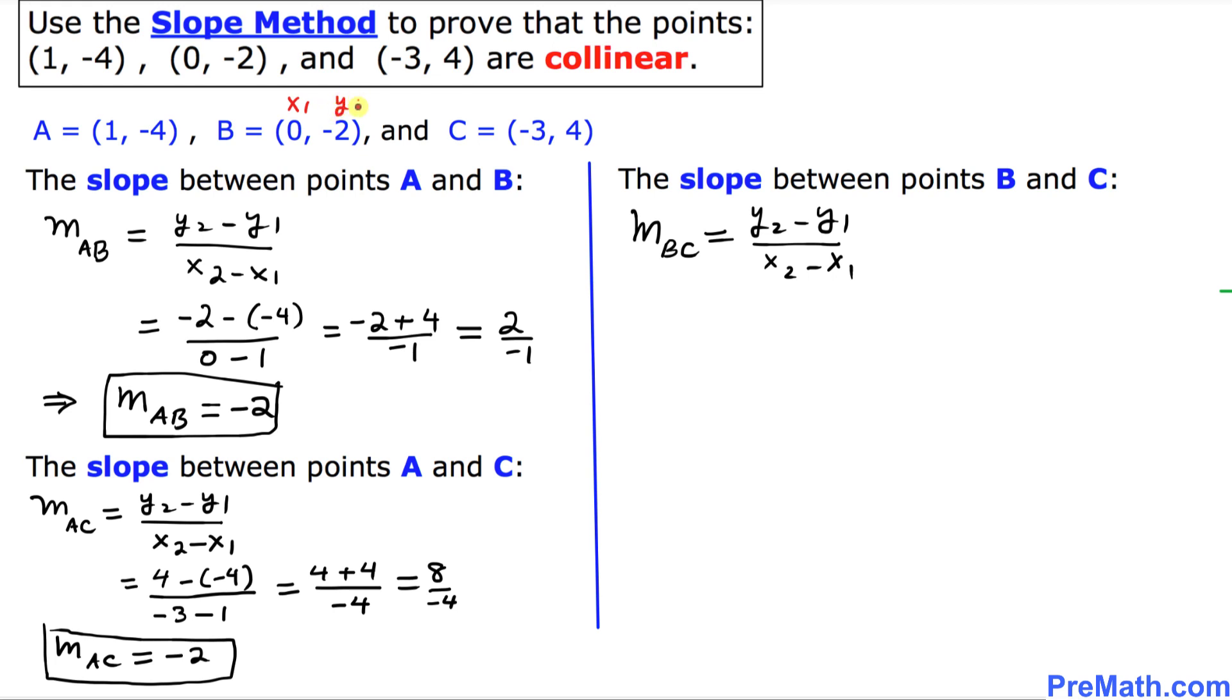And since this time we are focusing on B and C, I want to call this B as x1, y1 and C as x2, y2. Let's fill in the blanks. So this is going to simply become y2, in our case is 4, minus -2 divided by x2, in our case is -3 minus 0.